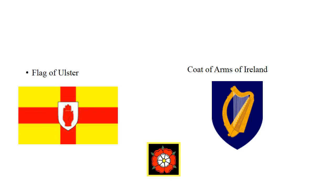There are other Hebrew symbols found all over Europe. The flag of Ulster has a red hand with a string tied around it. The coat of arms for Ireland has a harp of David on it. And you see the rose of Sharon on many of the coat of arms.